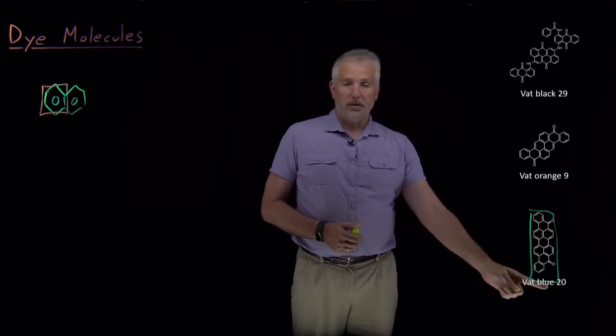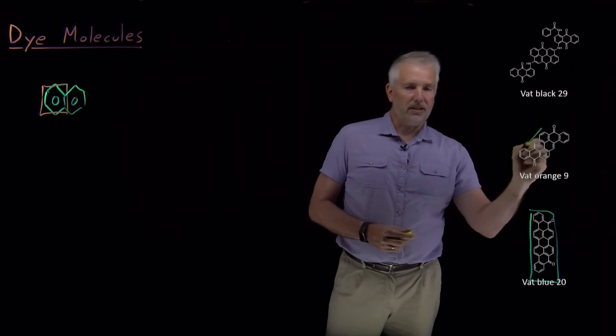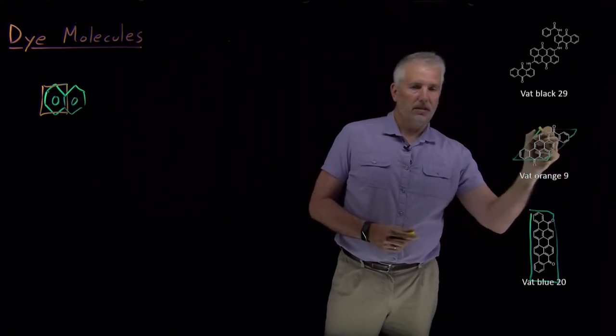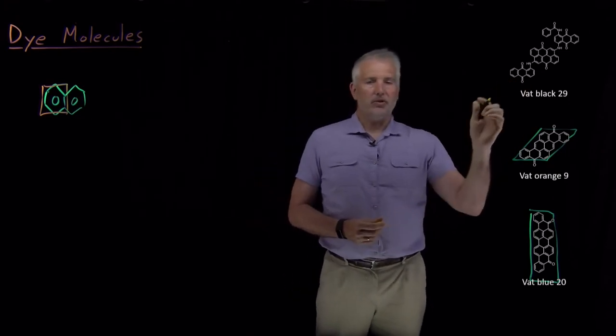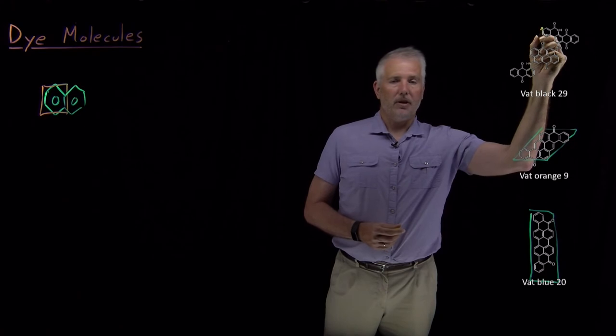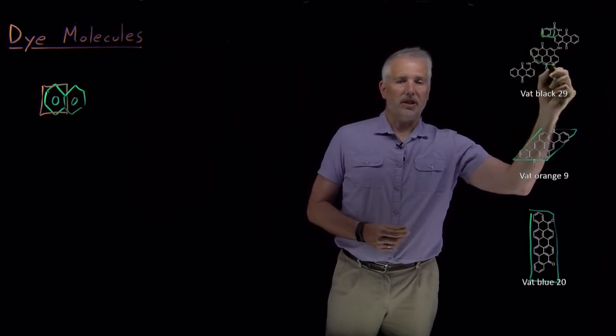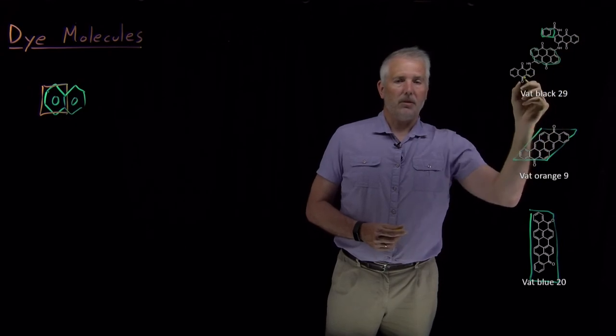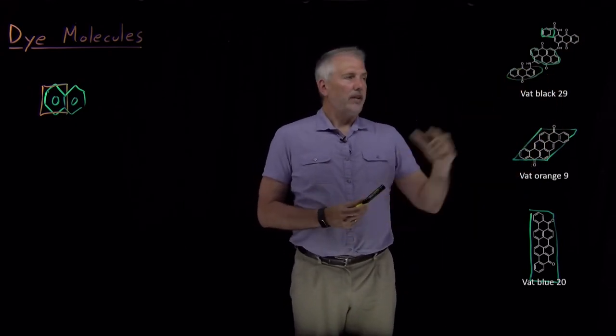Other molecules with different sized boxes absorb different frequencies of light. Molecules like Vat Black 29, for example, have a mix of some small conjugated sections, some larger sections, and some more moderate sections. This molecule absorbs light via electrons in several different sized boxes.